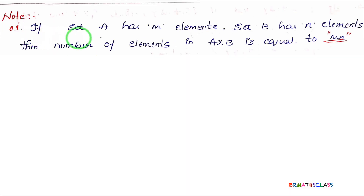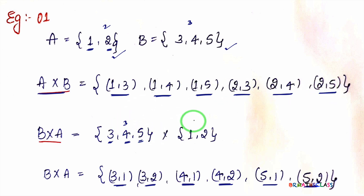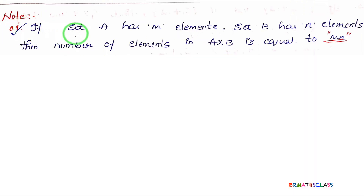Point 1: If set A has m elements and set B has n elements, then the number of elements in A cross B equals mn. In our example, set A has 2 elements and set B has 3 elements, so A cross B contains 2 × 3 = 6 elements — you can count: 1, 2, 3, 4, 5, 6. This is a very important point to remember.